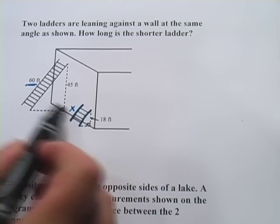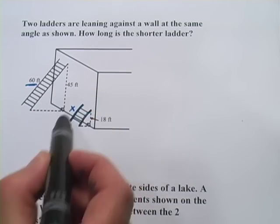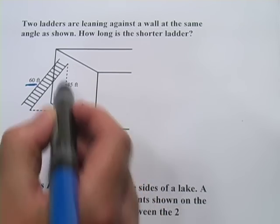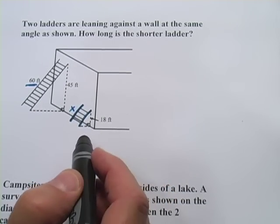I'm going to call this one x. Those two correspond, and then we have this other measure, the height of it against the wall. We have 45 and 18. So we can set up a proportion here.